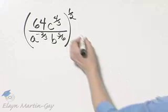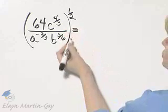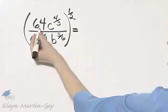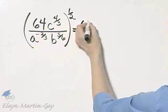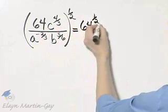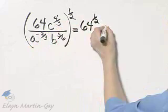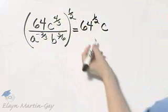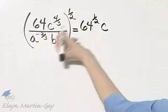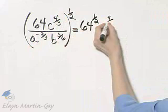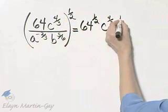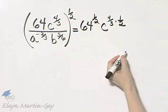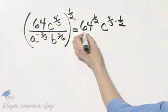To simplify this expression, let's use rules for exponents. So that's 64 to the 1 half power. That is c to the 4 thirds to the 1 half power. So that would be c raised to a power of 4 thirds times 1 half. The power of a power, we multiply exponents.